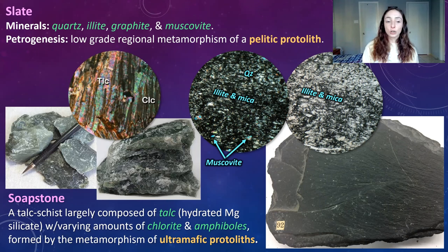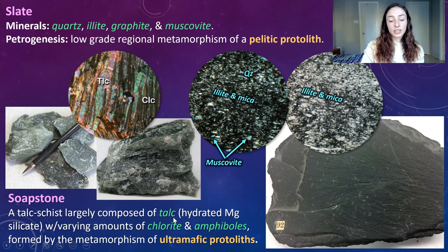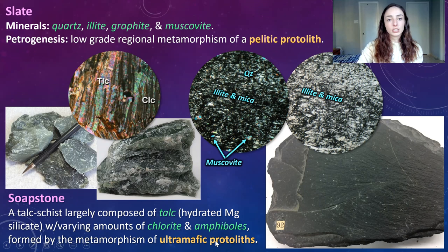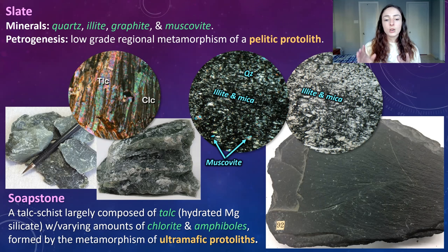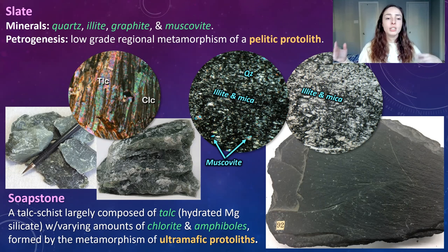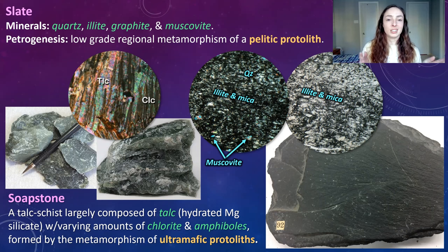Here we have an example of soapstone. Soapstone is a talc schist — a talc-dominated schist metamorphic rock. Talc is a very soft hydrated magnesium silicate mineral, and soapstone often contains varying amounts of chlorite and amphiboles as well. It's formed by the metamorphism of ultramafic protoliths, just like serpentinite. A way to identify soapstone is by its softness — talc is extremely soft and you can pretty much scratch it with your fingernail. If you can scratch it with any other rock in the lab, it probably contains a lot of talc and is likely soapstone.